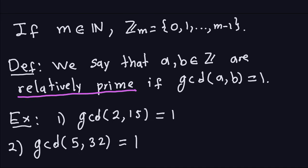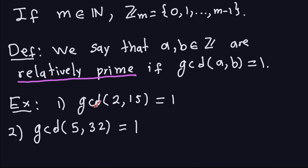Here are a couple of examples. The GCD between 2 and 15 is 1 — you can easily check that because the largest common divisor between 2 and 15 is only 1 — so we say that 2 and 15 are relatively prime. Similarly, 5 and 32 don't have any common factors, so the GCD will be 1, and for that reason they are also relatively prime.